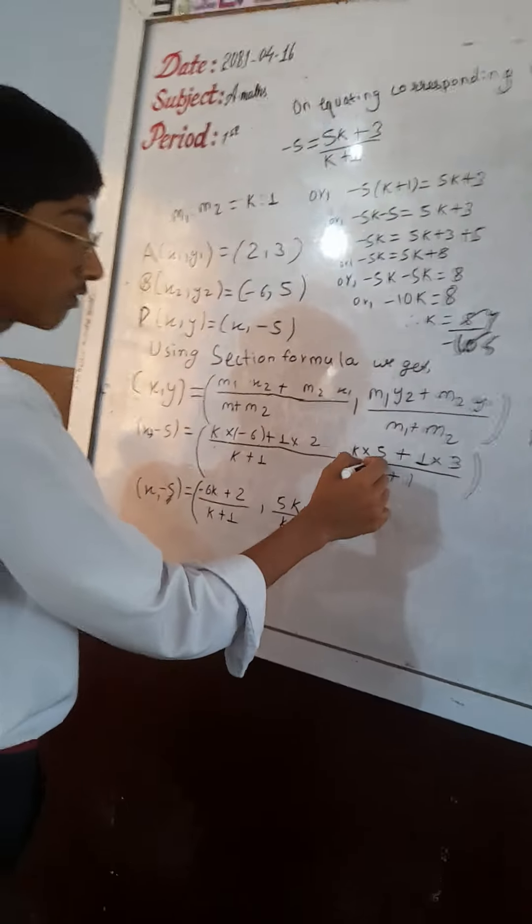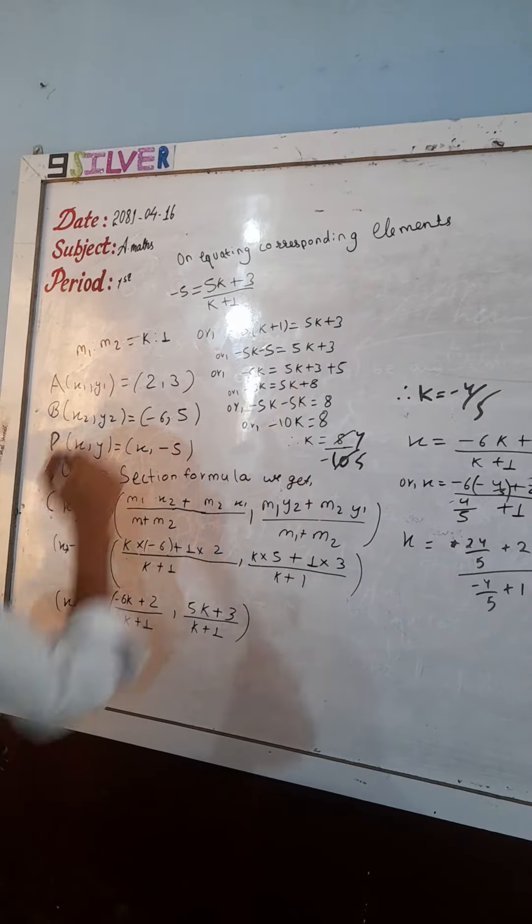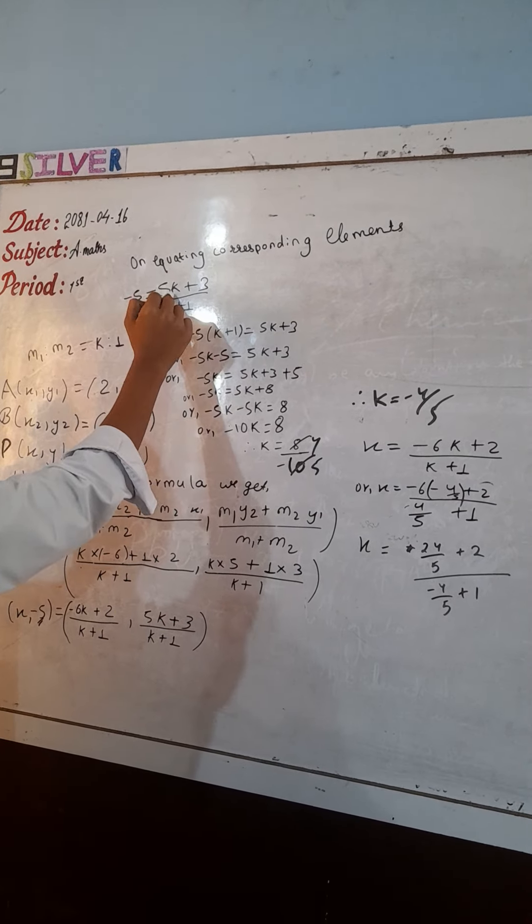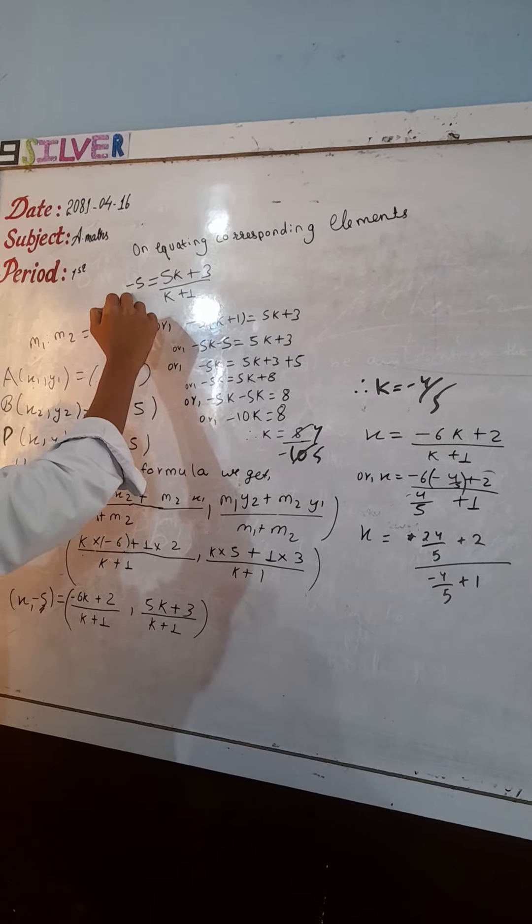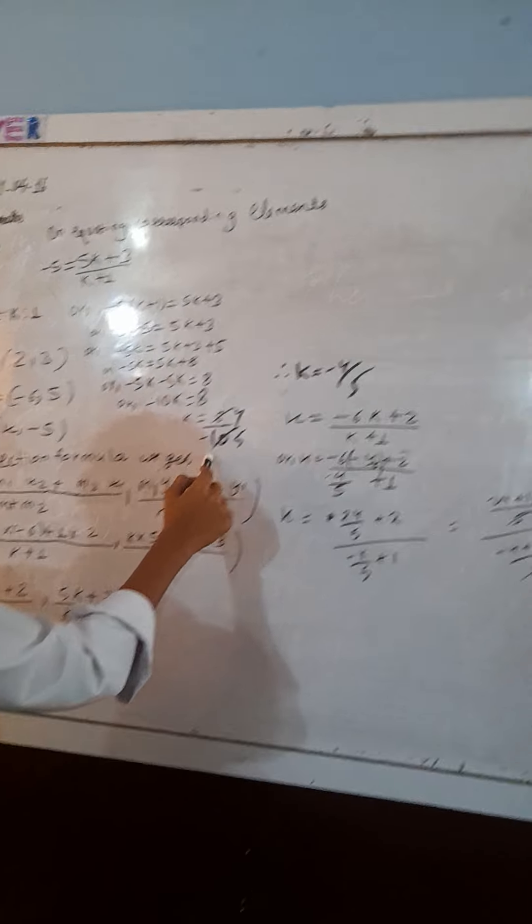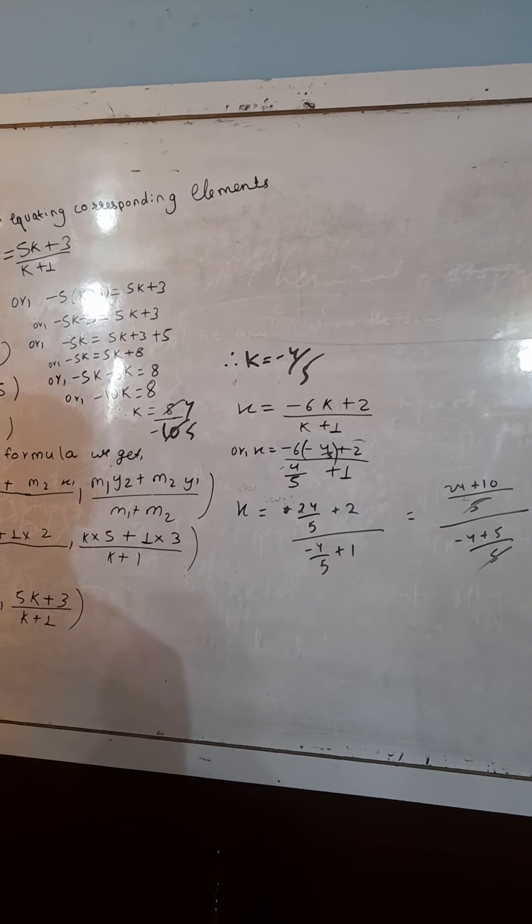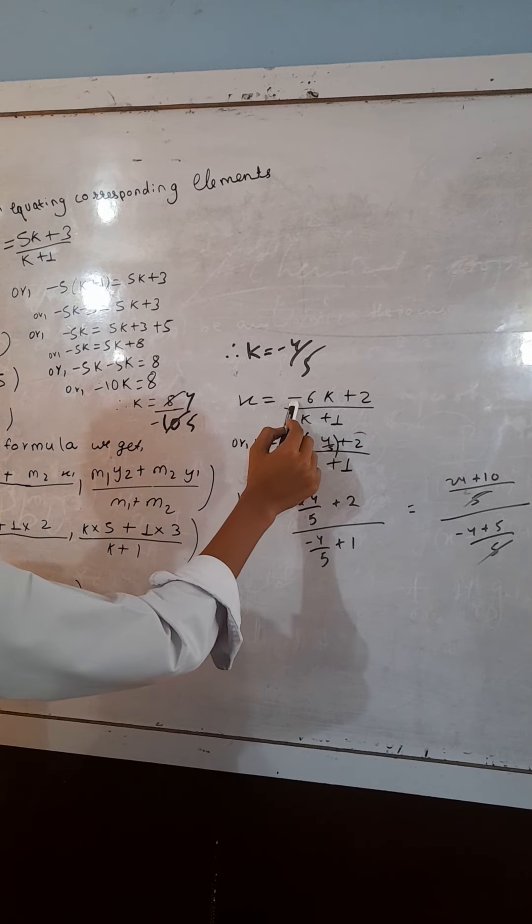K into 5. On equating, we equate the corresponding element. While the K is minus 5, the value of K is minus 4 comma 5.